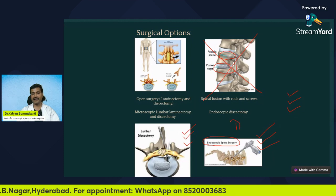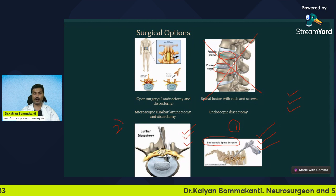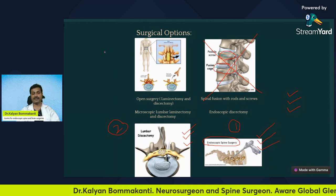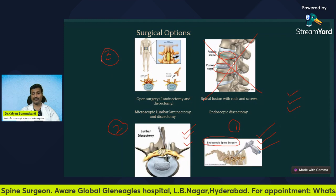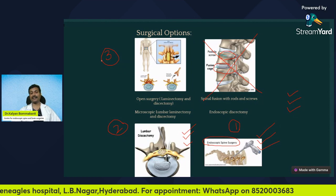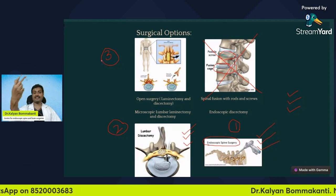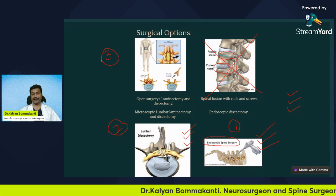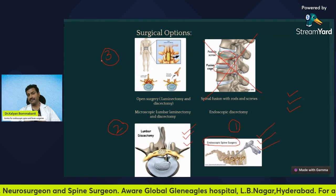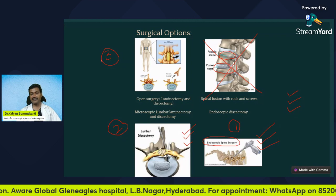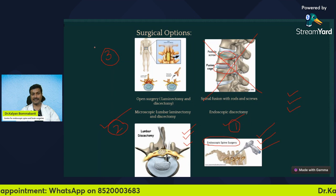This is as per my experience, my knowledge, and my training. The second best option is micro lumbar laminectomy and discectomy. Third best option for me is open surgery. Open surgery still has a role in very complicated cases. But for this patient, endoscopic spine surgery is the first best option, microscopic surgery is the second best, and open surgery the third. After discussing all the options with the patient, we proceeded with endoscopic discectomy.